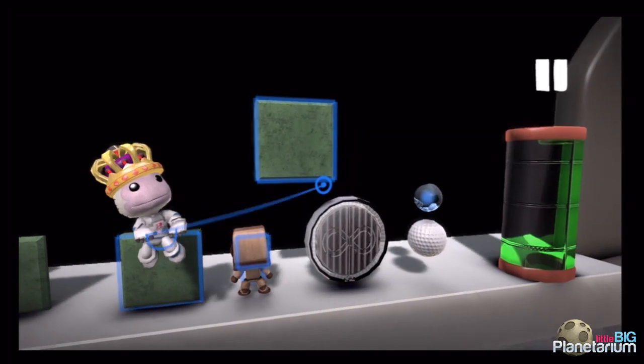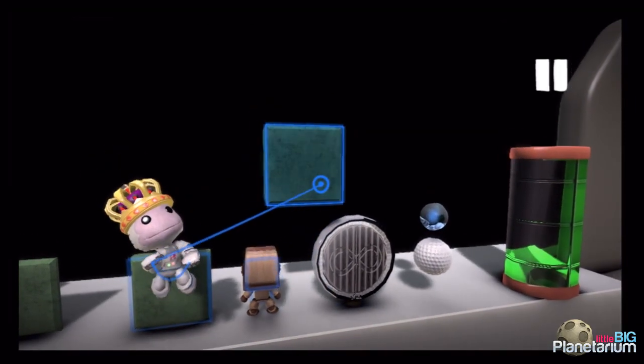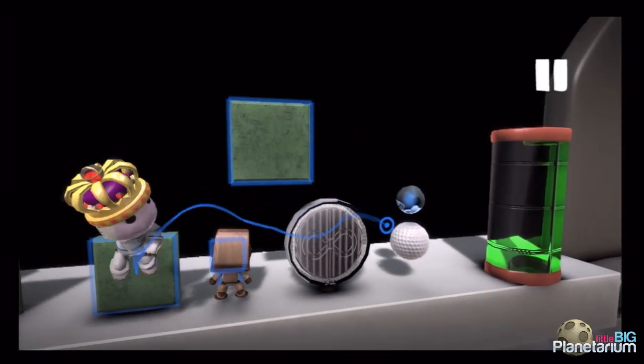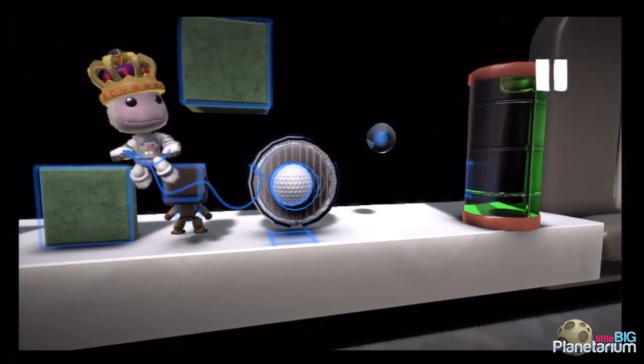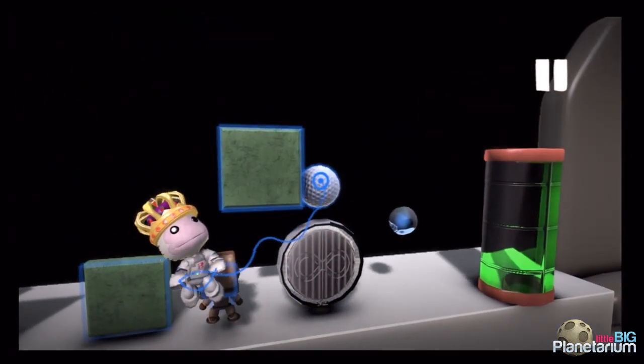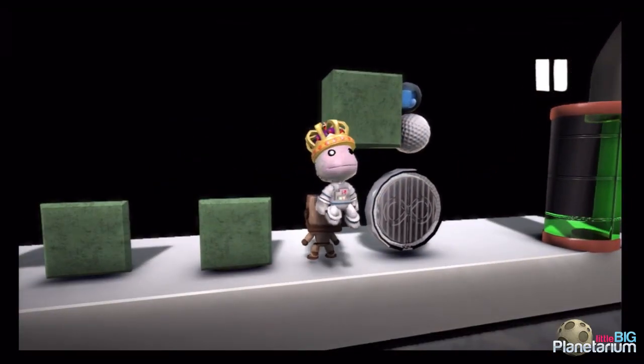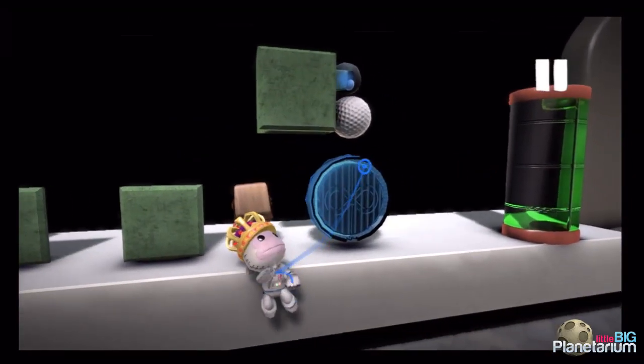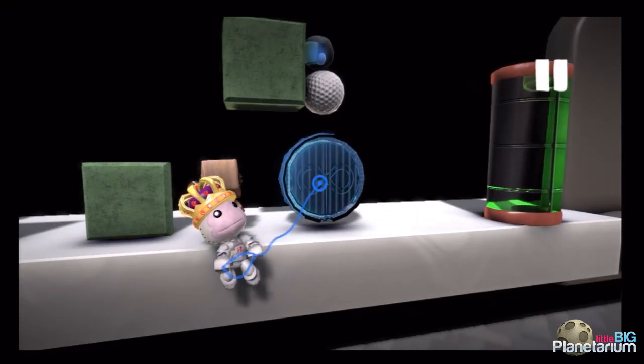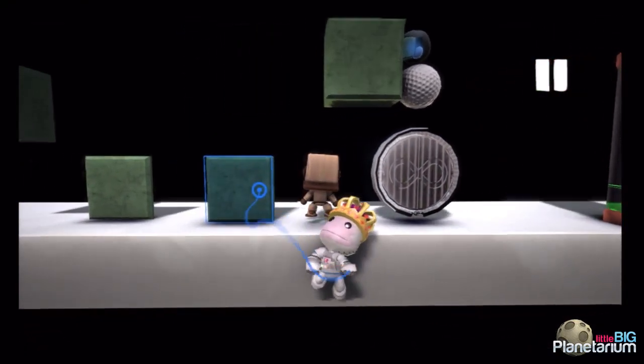There are other objects that are the same thickness as this Thack material, the same thickness as Sackboy, such as a golf ball. So a golf ball is the same thickness. Point bubbles.